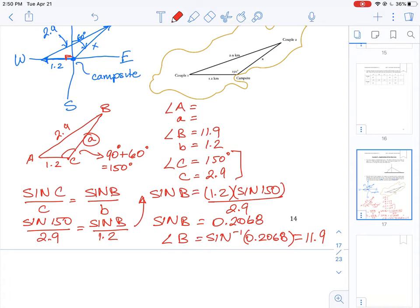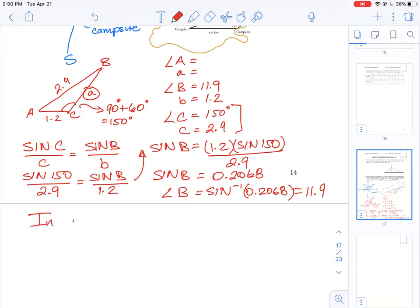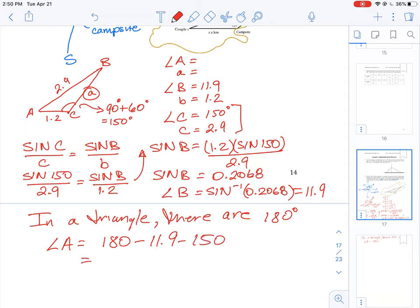Blank page, so we can keep going. We know that in a triangle there are 180 degrees, so the missing angle A we can say is equal to 180 minus the known angles, which is 11.9 and 150. So that can give us a value here of 18.1 degrees. So that helps us out with this value here: 18.1.